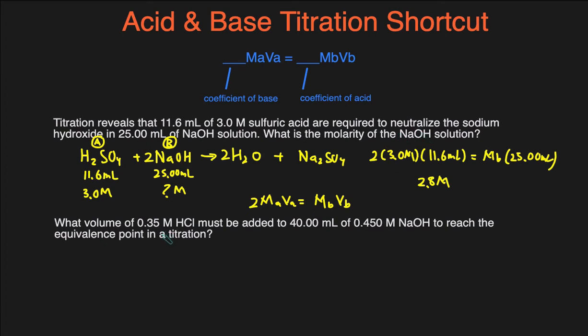All right, let's take a look at another example. So the very first step is just to write the reaction out. It's going to be HCl plus NaOH, and then the products will be H2O and NaCl. And this reaction is already balanced. Everything has a coefficient of 1.